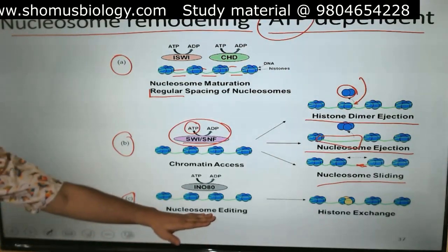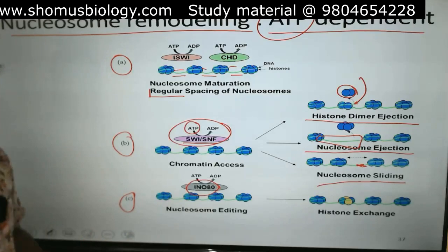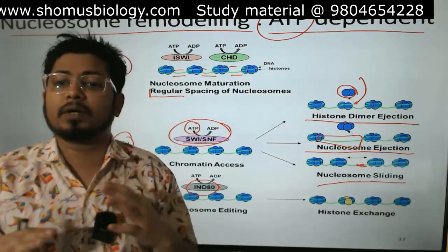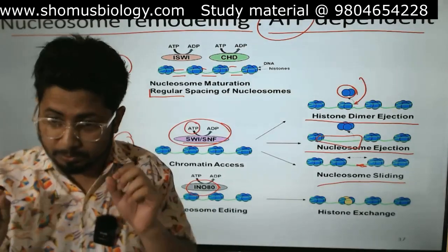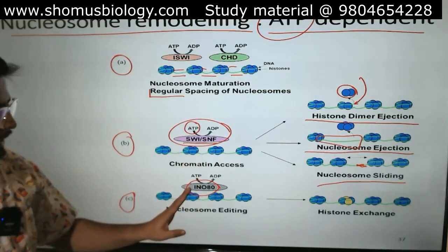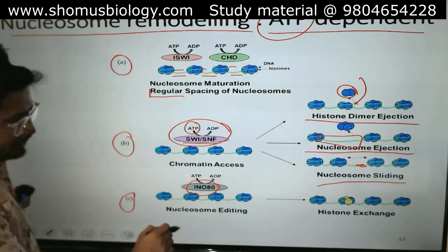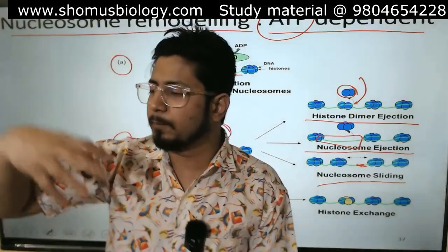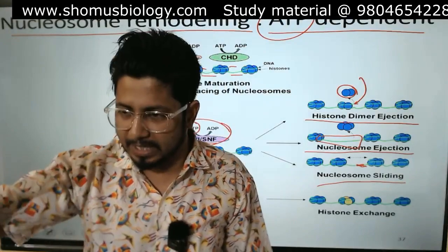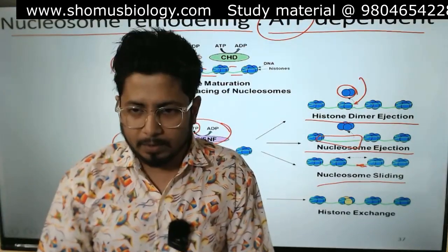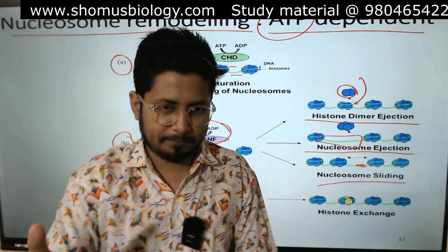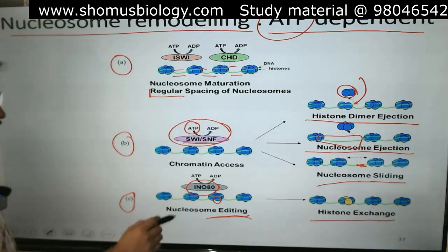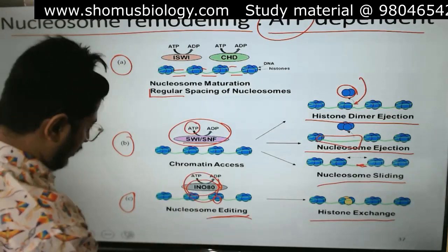Nucleosome editing is another job done by the INO80 complex — again another multi-protein complex. INO80 also utilizes energy. Editing means modifying one histone — let's say a histone is not working properly or maybe the protein is not folded properly, or once it is tagged with acetylation or a phosphate group it is not doing its job. So that histone can be clipped out and a new histone protein can be added. This is the histone exchange process, also known as nucleosome editing, carried out by the INO80 complex.